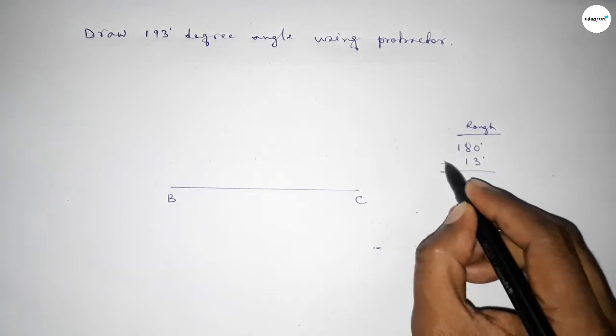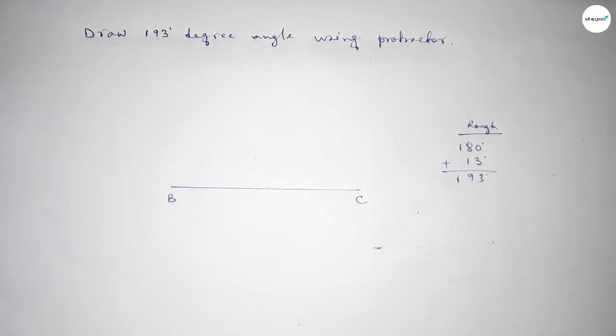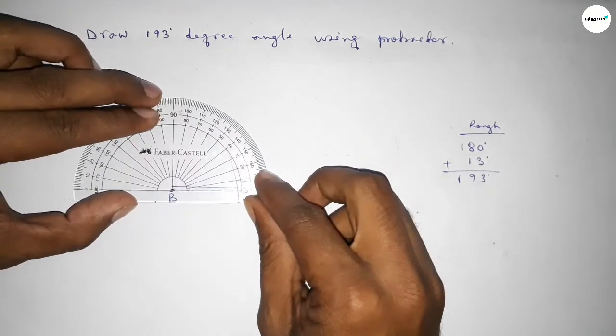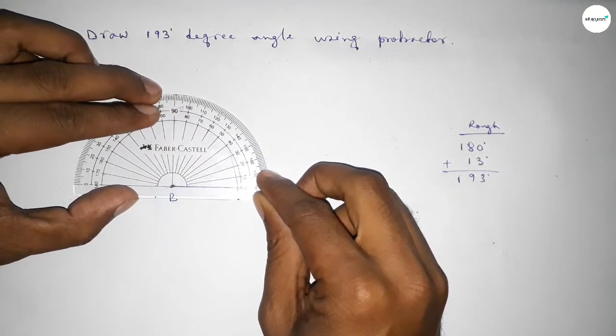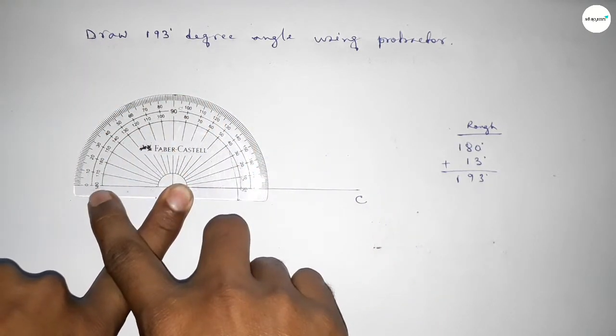with 180 degrees, then we can get 193 degree angle. So first we have to count 180 degree angle. Putting the protractor on point B and counting the angle, so this is 180 degrees.